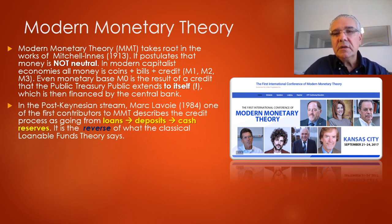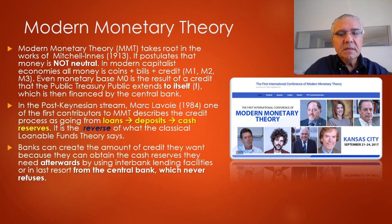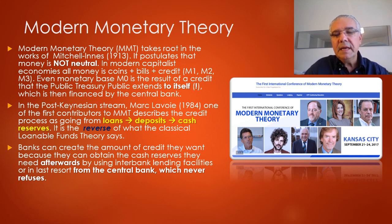In the post-Keynesian stream, Marc Lavoie, who is one of the main contributors to MMT, describes the credit process as going from loans to deposits to cash reserves. That process, in that direction, is the reverse of what classical theory says. Banks create the amount of credit they want because they can obtain the cash reserves they need afterwards to comply with regulations. They do so by either using interbank lending facilities, or as a last resort, they can turn to the central bank and get the cash from there.